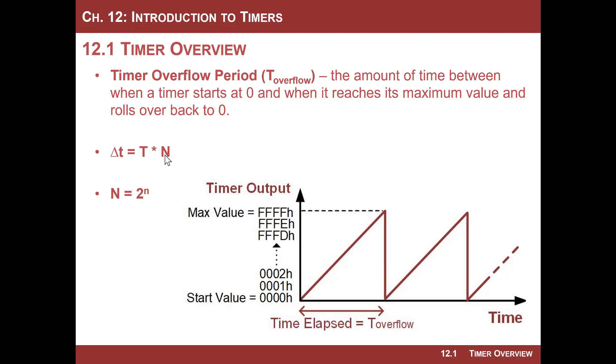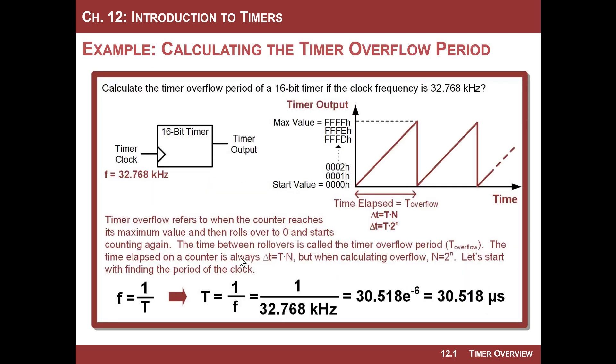So instead of actually plugging in a hard, a fixed number like we did in the last example, you actually plug in 2 to the n. So let's do an example. Let's say that you had a timer and it was clocked off of something like 32 kilohertz. This is also an option on the MSP430, the MCU we have. And I want to know, tell me how much time elapses on a timer overflow. How frequent is a timer overflow occurring?